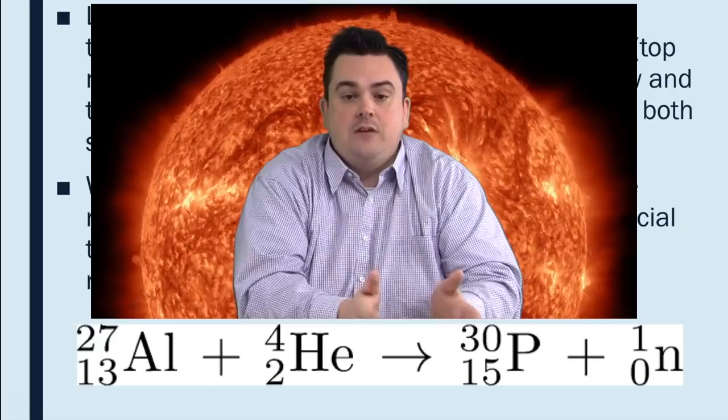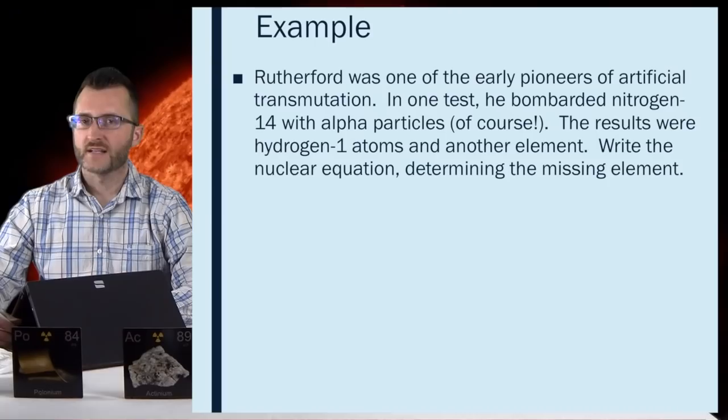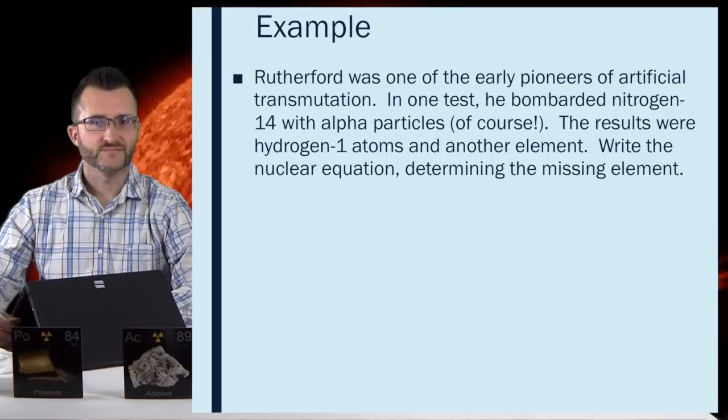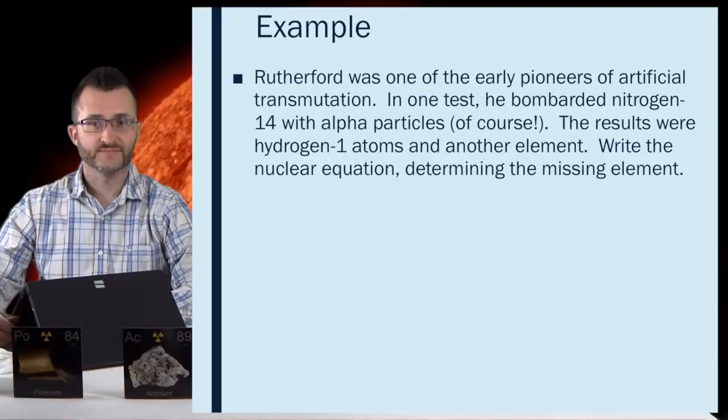Alright, ladies and gentlemen, we have an example of an artificial transmutation equation. Shu, are you ready? I'm ready. Alright, hey Shu, did you know that Rutherford was one of the early pioneers of artificial transmutation? Oh, word. In one test, he bombarded nitrogen-14 with alpha particles. Of course! Yeah, alpha particles. The results were hydrogen-1 atoms and another element. Write the nuclear equation determining the missing element.